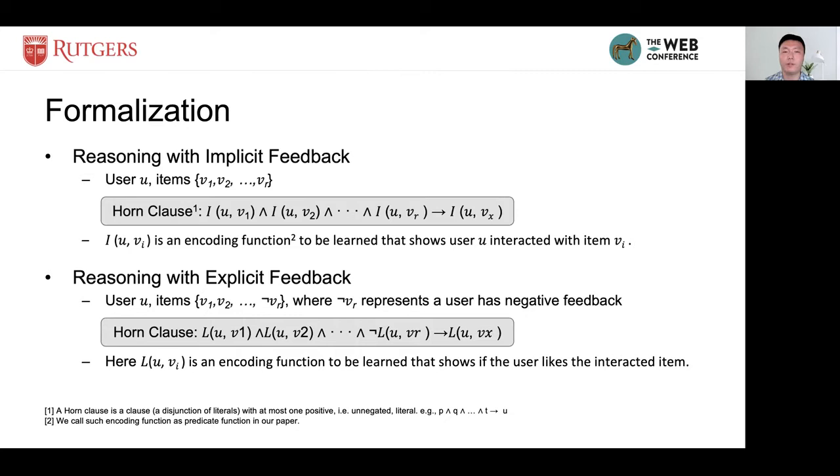Here, we consider two common recommendation scenarios: interactions with implicit feedback and explicit feedback. For reasoning with implicit feedback, we suppose that we are given the user u and his interactive items v1, v2, up to vr.